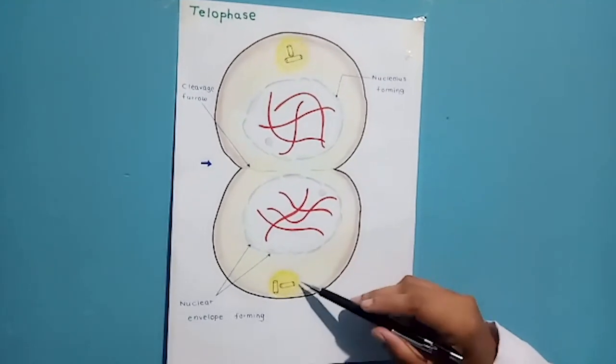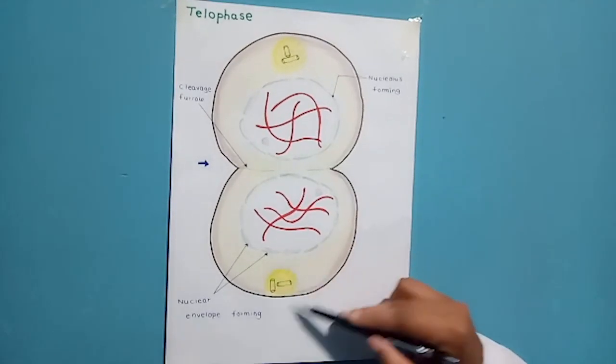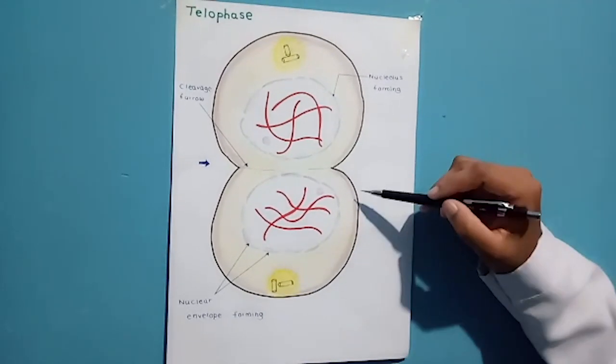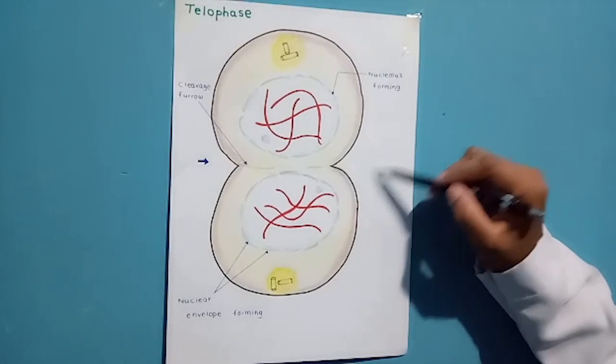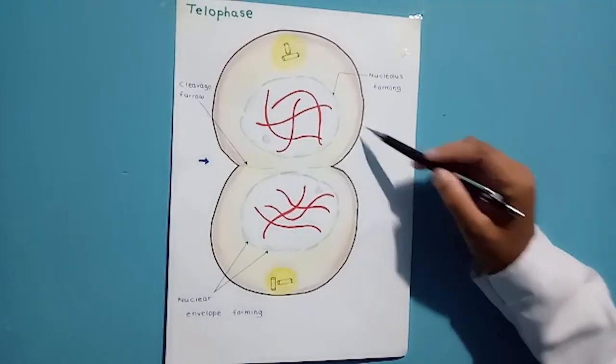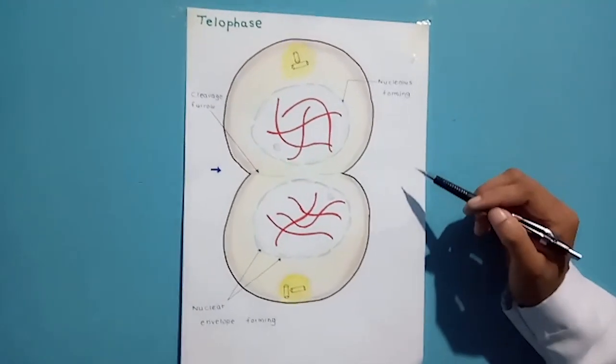Any remaining spindle microtubules are depolymerized. Mitosis, the division of one nucleus into two genetically identical daughter nuclei, is now complete.